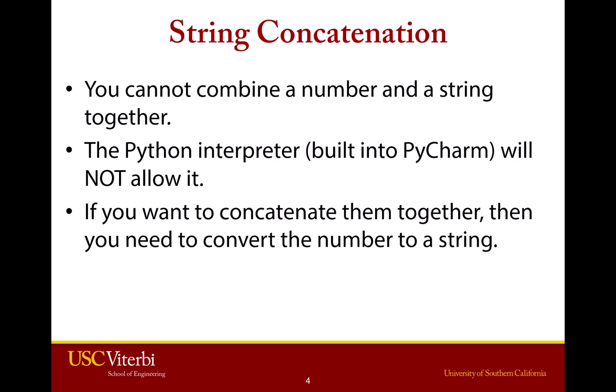Now, when you concatenate strings, a couple caveats here. You cannot combine a number and a string — Python does not know what to do with plus between a number and a string. When you have two ints, you get an int. Two strings together gives you a string. But if you try to combine them, it'll give you an error. So if you need to concatenate a string and an int, you have to convert the integer to be a string.